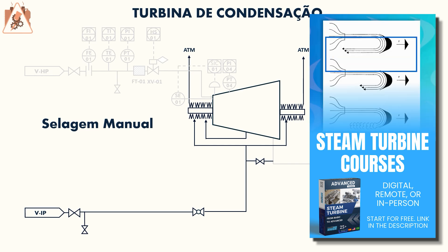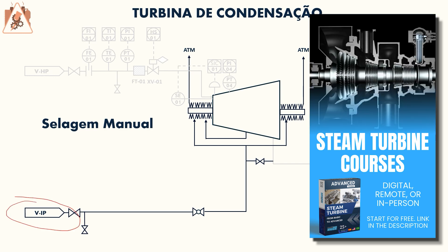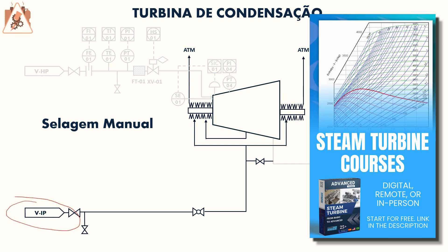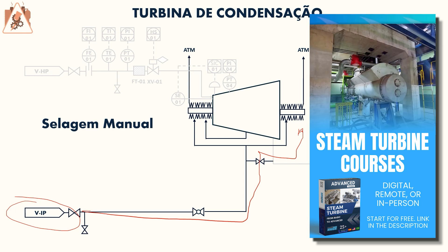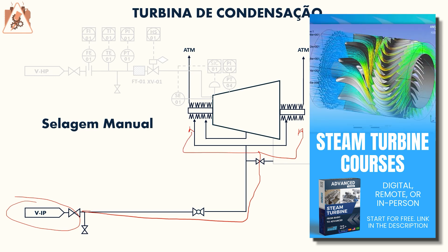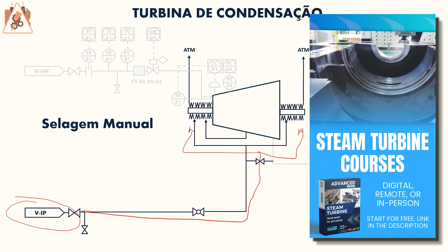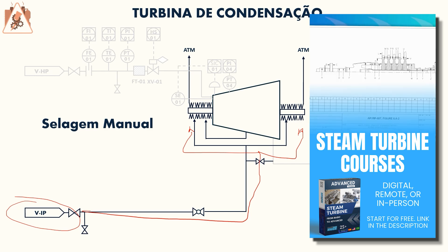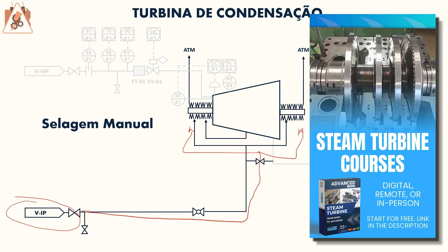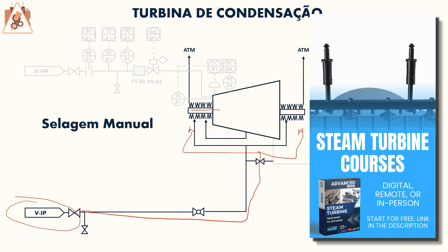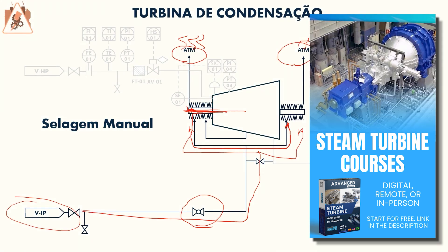Manual sealing is no longer permitted by the API 612 standard, but older machines from the 1960s and 70s may still have this type of seal because at the time it was allowed. Basically, this sealing system consists of an intermediate pressure vapor; we admit steam into the turbine.